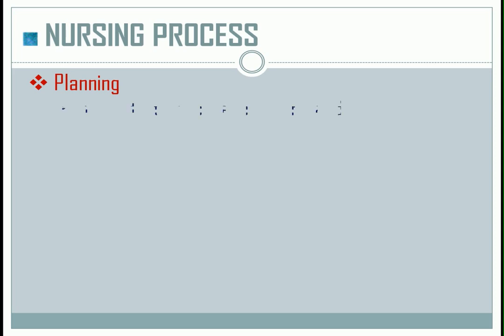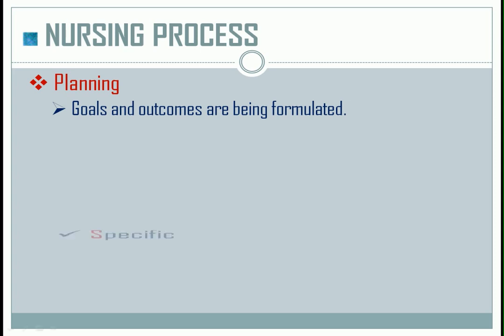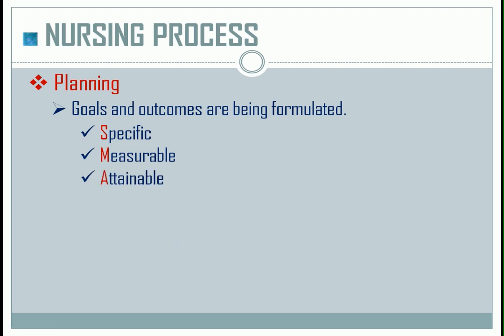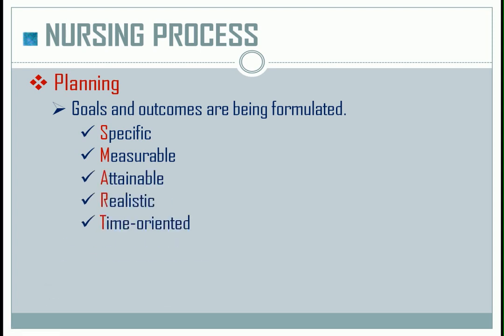Planning is the step where goals and outcomes are formulated. Goals should be SMART, which means they must be Specific, Measurable, Attainable, Realistic, and Time-oriented.